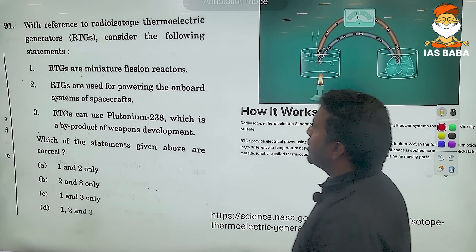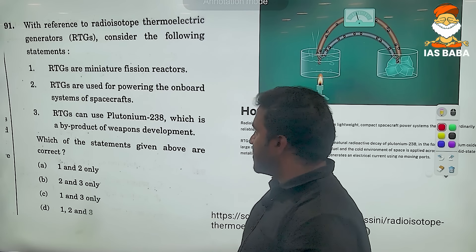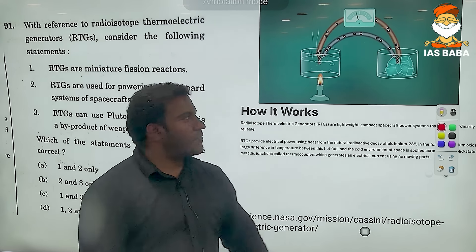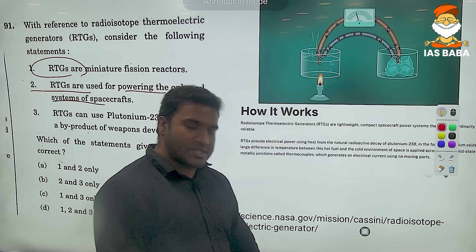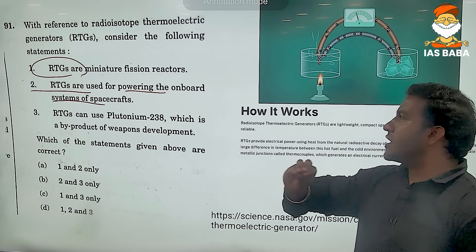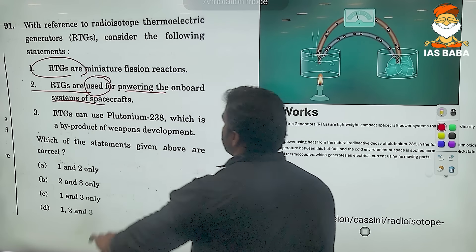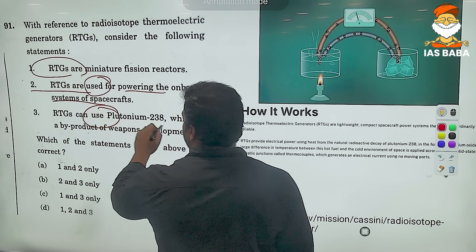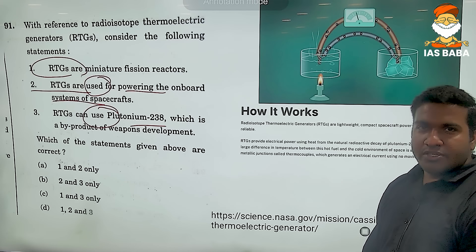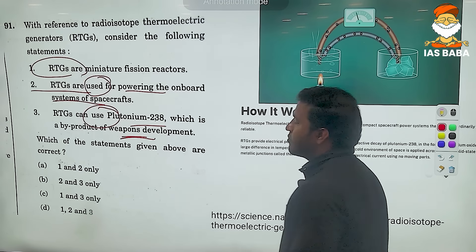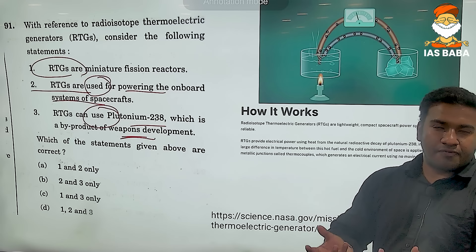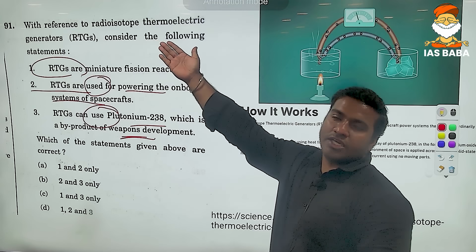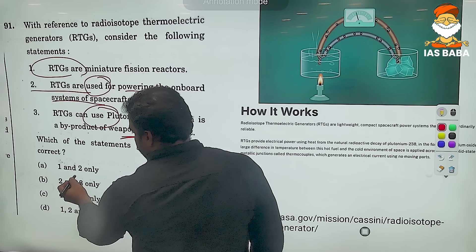Next: 'With reference to radioisotope thermoelectric generators (RTGs), consider the following statements.' Statement 1 says RTGs are miniature fission reactors. Statement 2 says RTGs are used for powering the onboard systems of spacecraft. Using the word 'use' liberally — RTGs can use plutonium-238, which is a by-product of weapons development. Plutonium-238 is radioactive. So use is valid. Either B or D should be the answer.